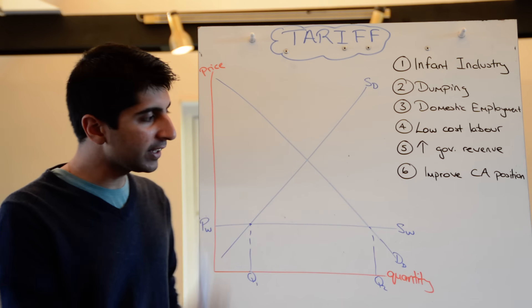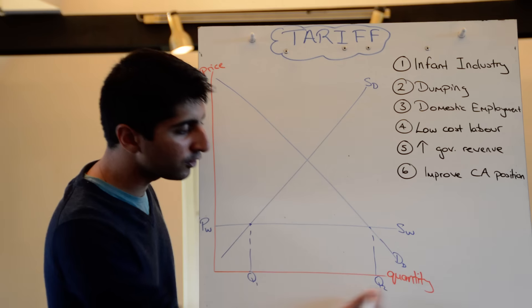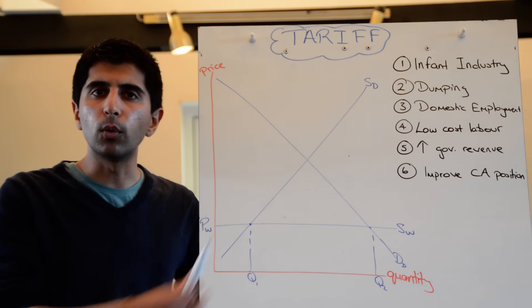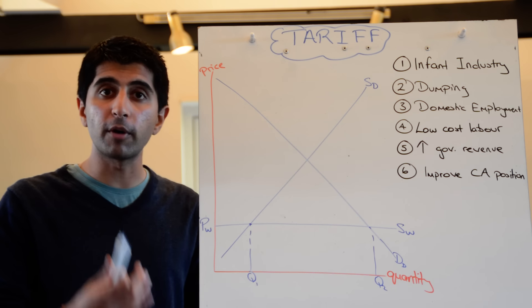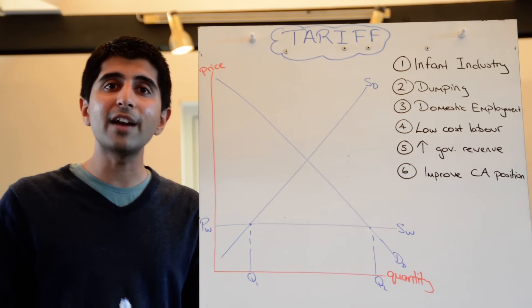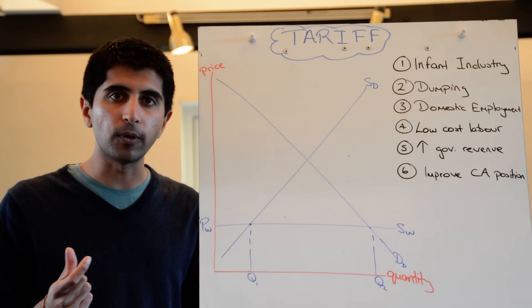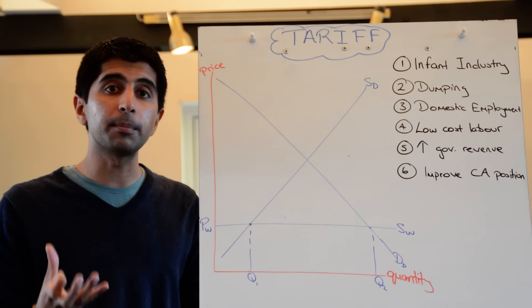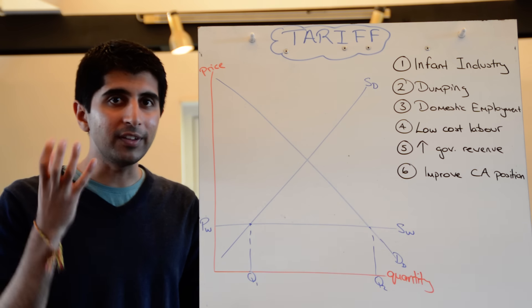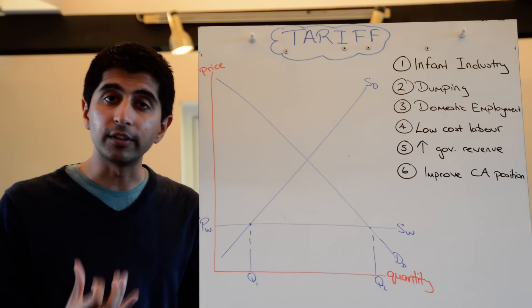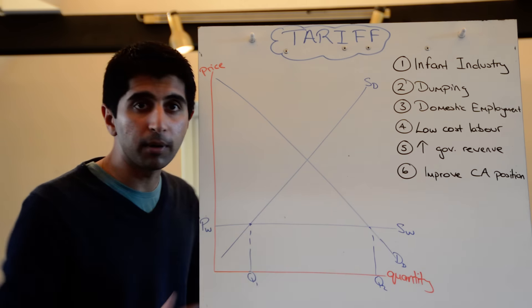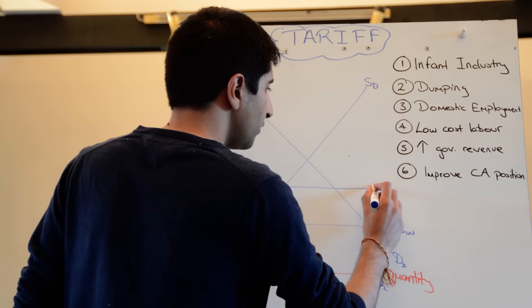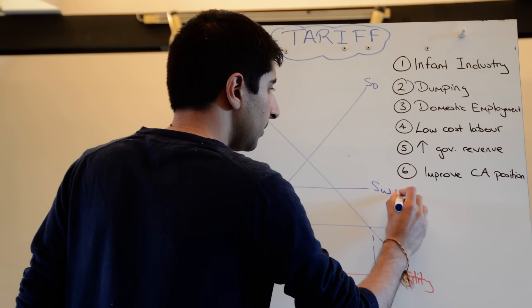Let's now assume that the domestic government says, okay, we want to reduce the number of imports coming into the country. Maybe because of one of these reasons here. We want to adopt a tariff as a form of protectionism. Remember what a tariff is. A tariff is a tax on imports. Any time a tax is imposed on a market, it shifts the supply curve upwards. So this tax comes on imports from world suppliers, so it affects the supply of the world curve and it shifts it up.